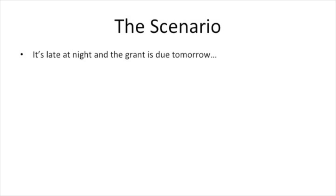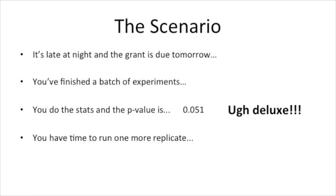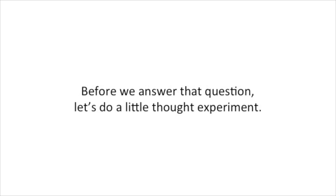Here's the scenario. It's late at night and the grant is due tomorrow. You finished a batch of experiments. You do the stats and the p-value is 0.051. You have time to run one more replicate. What do you do? Before you answer that question, let's do a little thought experiment.